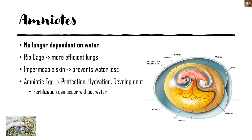The next clade is amniotes, also within the tetrapod clade. Here we see the transition from being dependent on water to no longer being dependent on water. The first trait is a rib cage, which enables more efficient lungs through more efficient ventilation. With more efficient lungs, you no longer need moist thin skin, so we see the development of impermeable skin, which helps prevent water loss. Most importantly, the amniotic egg develops, allowing reproduction without needing a large aquatic body of water. The amniotic egg provides protection, hydration, and a safe place for the embryo to develop.